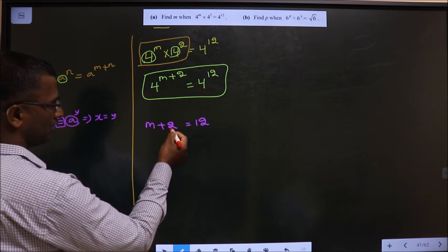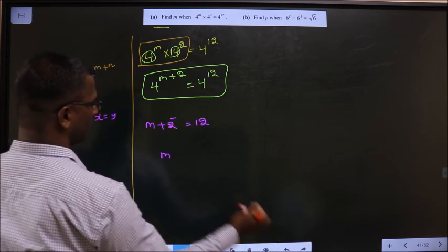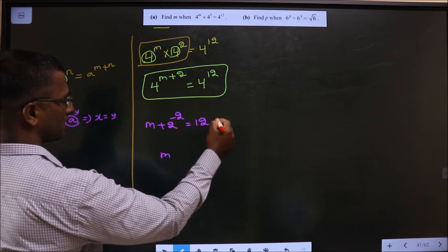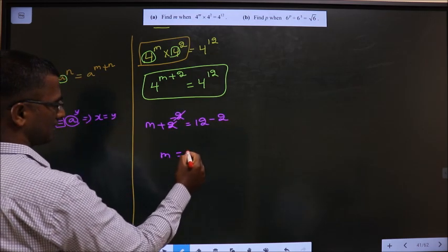So m + 2 = 12. To get m, subtract 2 from both sides. This cancels out, so m = 10.